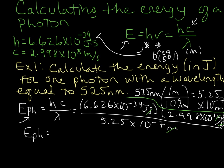And so when we do that math, we're going to end up with 3.78 times 10 to the negative 19 joules. So that's the energy of one photon with a 525 nanometer wavelength.